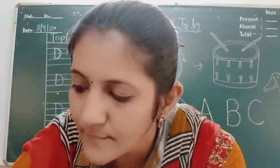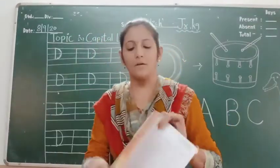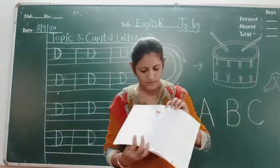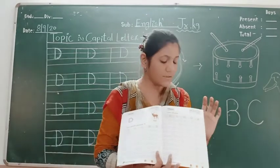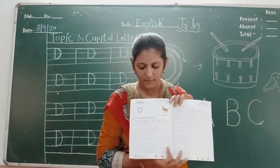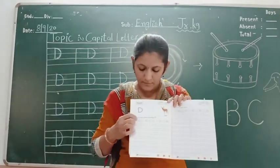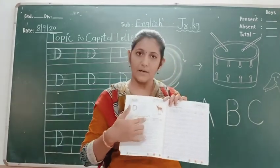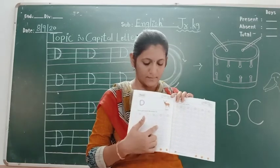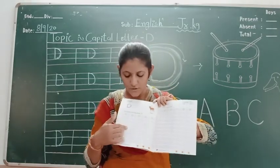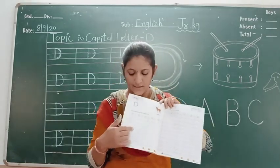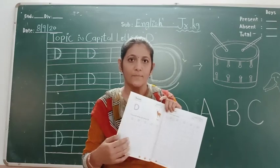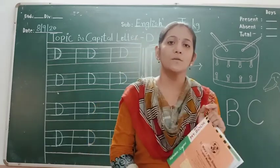So students, in our English knowledge book, page number 17 and 18, trace and write the capital letter D. At your home, join the dots and write capital letter D.